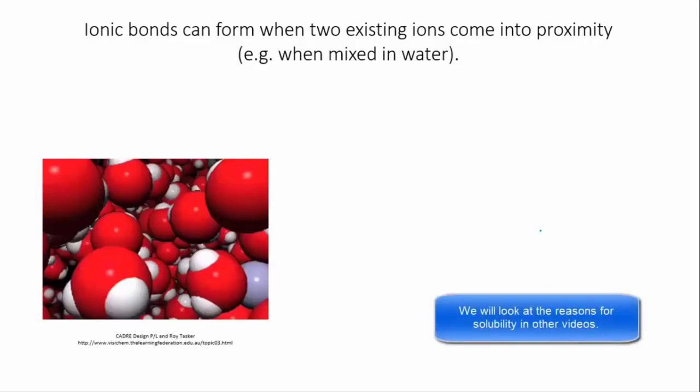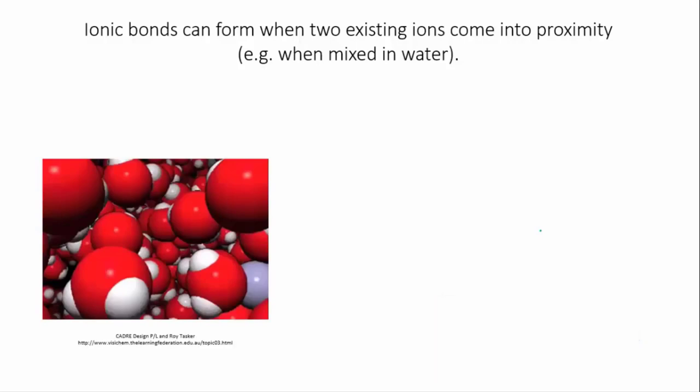If silver ions meet chloride ions in solution, they'll begin to stick together to form ionic bonds, which will create macroscopic particles that are visible as a solid precipitate.